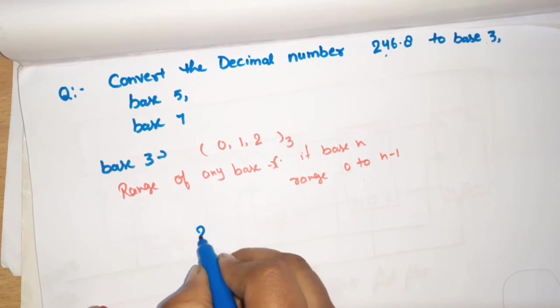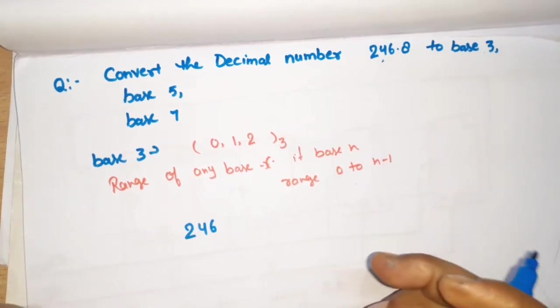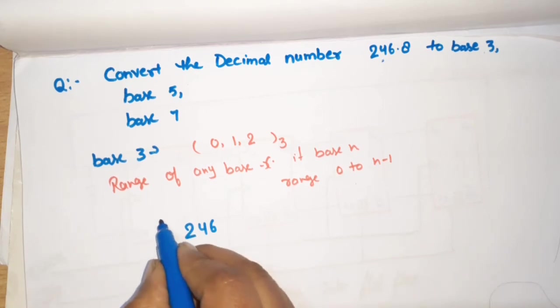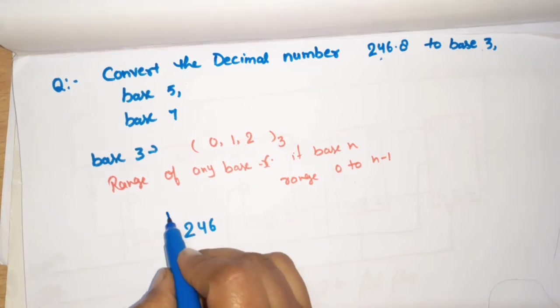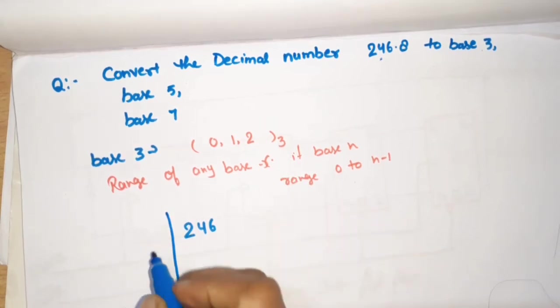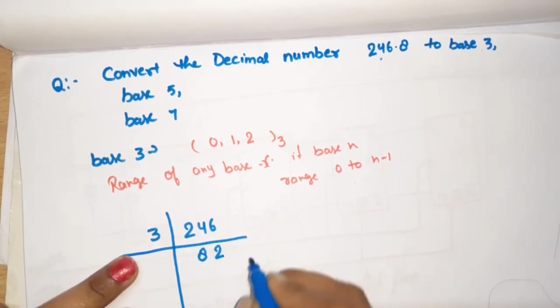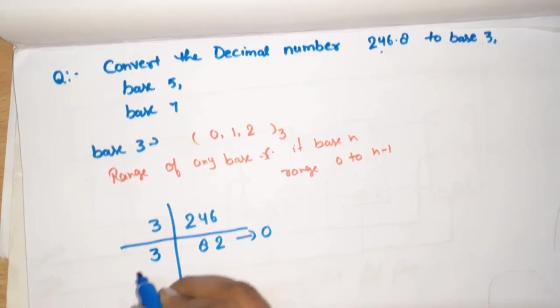Now, what do we do? 246. Our question has the integer part and fraction part. If the integer and fraction conversions are different, then we will convert them separately. So, 246.8. We divide it by 3. 3 times 8 is 24, 3 times 2 is 6. What is the remainder? The remainder is 0. Again divide it by 3.